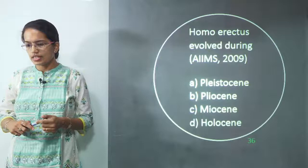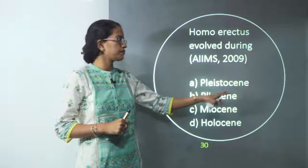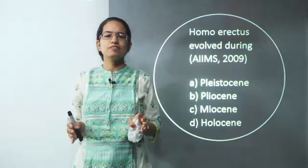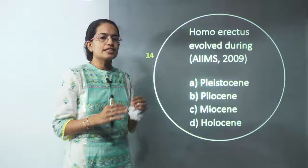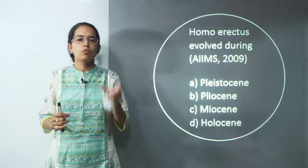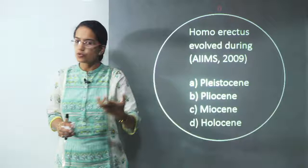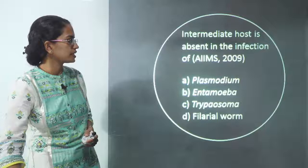The next question is about Homo erectus. The correct answer is Pleistocene — that is the phase when Homo erectus started to evolve. The topic of evolution is very important; there is a standard timeline and you can use mnemonics to memorize it. There is definitely one question every time on evolution — which era, which period, which organism came first. If you can memorize this, it becomes a very scoring section.